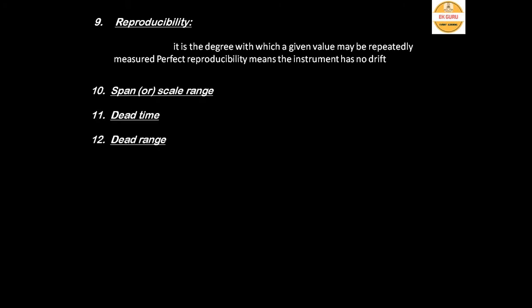Span, also called scale range, is the difference between the maximum value and the minimum value. For example, if a voltmeter can measure 0 to 100 volts, the scale range is 100 − 0 = 100 volts.